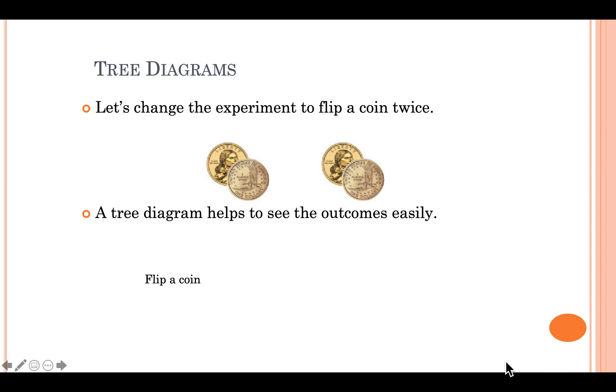And from that event, you list the two outcomes that are possible. Then, because there is a second event, flipping the coin another time, you are going to branch off of each of these two outcomes to additional outcomes.